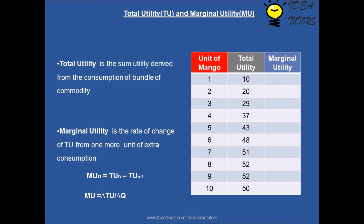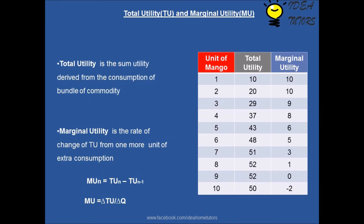Marginal utility is the rate of change of total utility from one more unit of extra consumption. The marginal utility of the Nth unit equals the total utility at that unit minus the total utility from the previous unit. In formula terms, marginal utility equals delta TU divided by delta Q, where TU is total utility, Q is quantity, and the Greek letter delta is the symbol for change.